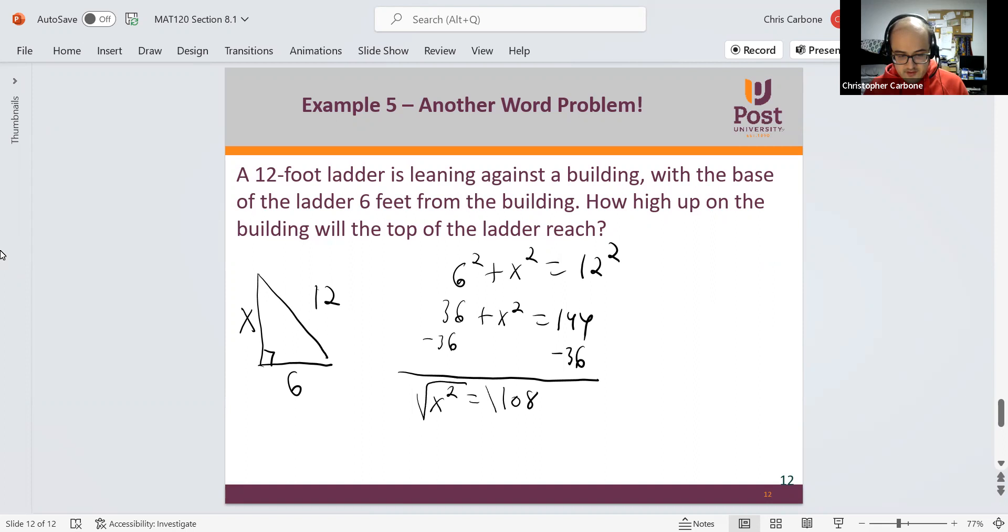Taking the square root of both sides, again, this is height. A negative value won't make any sense here. This equals the positive square root of 108. We can write that in simplest radical form as being 6 times the square root of 3, since 36 times 3 makes 108.